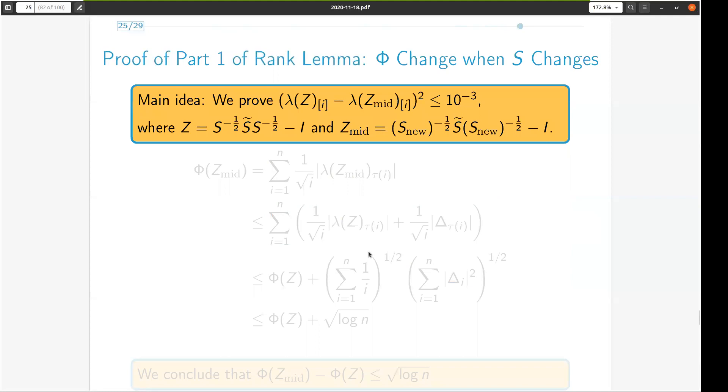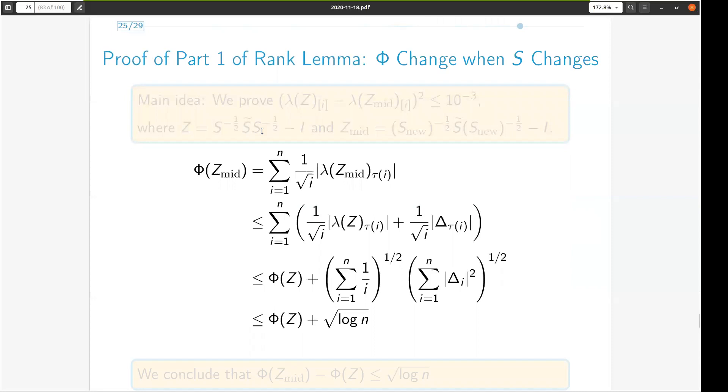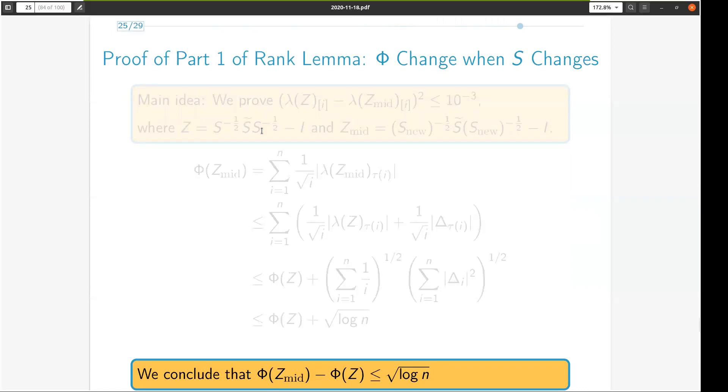And combine the two results over all iterations along with non-negativity of the potential function to get the rank lemma. So to show this first, the first change in potential, we first show this bound on eigenvalues of Z using Hoffman-Wielandt lemma. We then apply the definition of the potential function twice, along with Cauchy-Schwarz inequality, and the bound on eigenvalues to conclude our first step to proving the rank lemma.